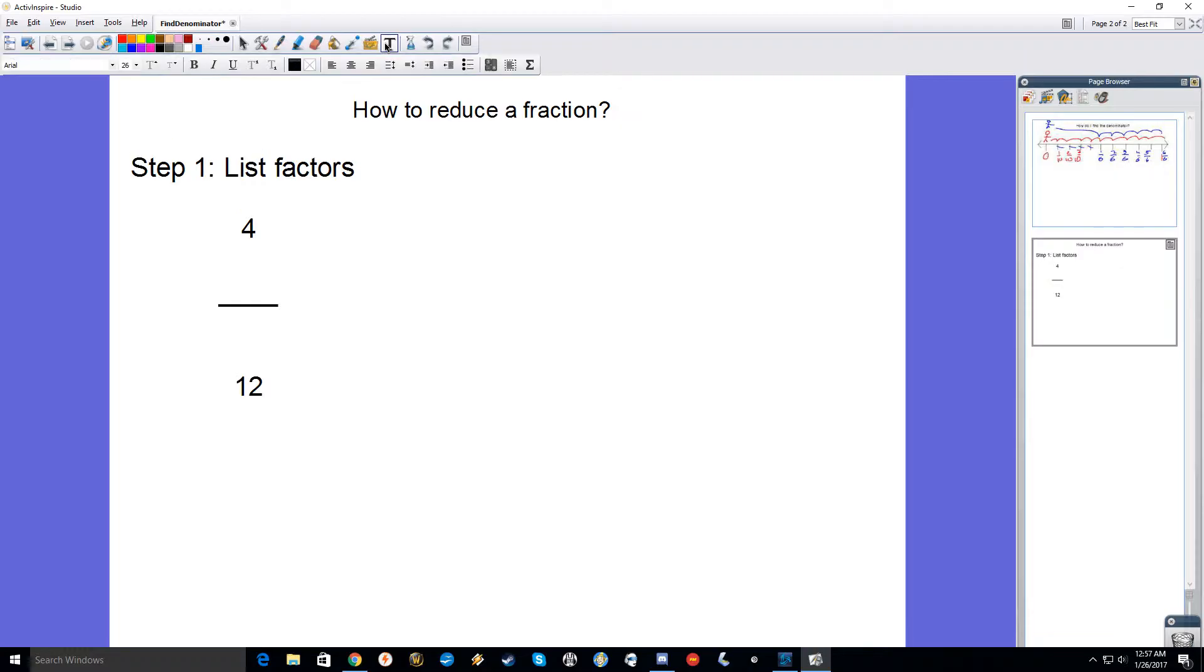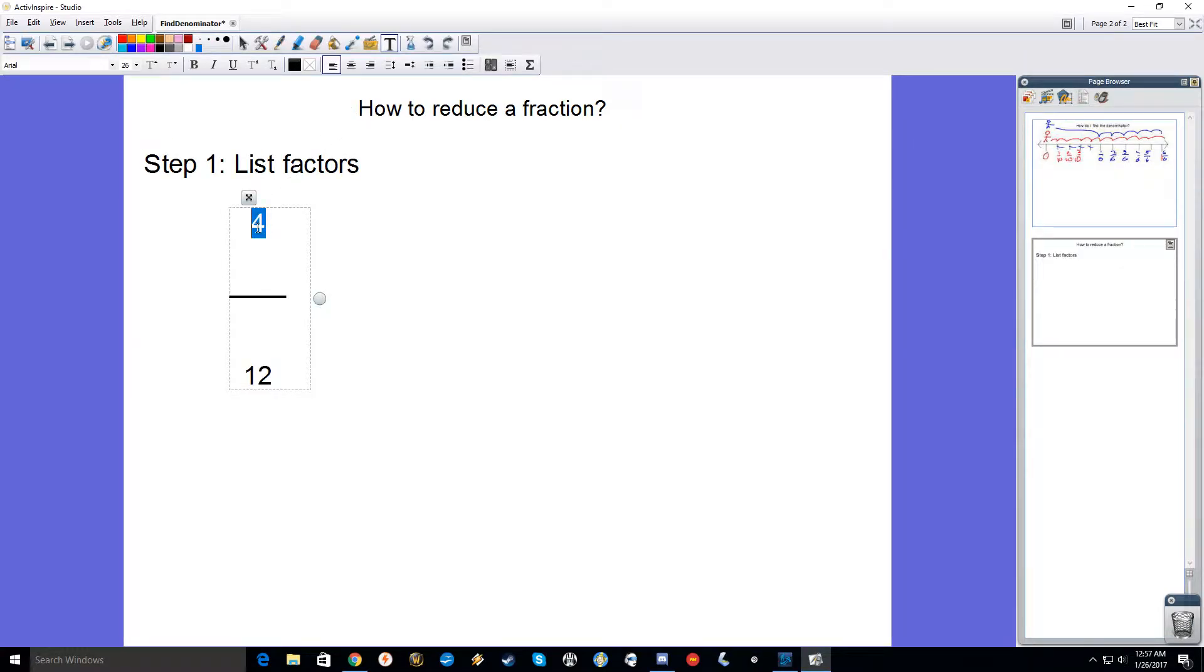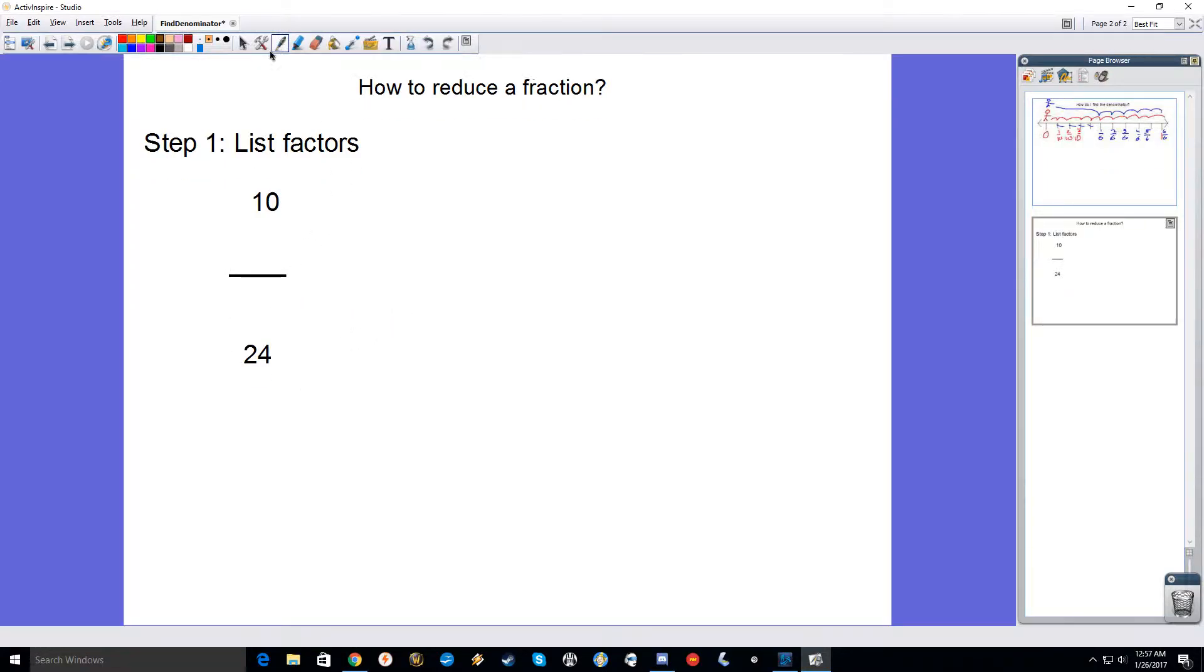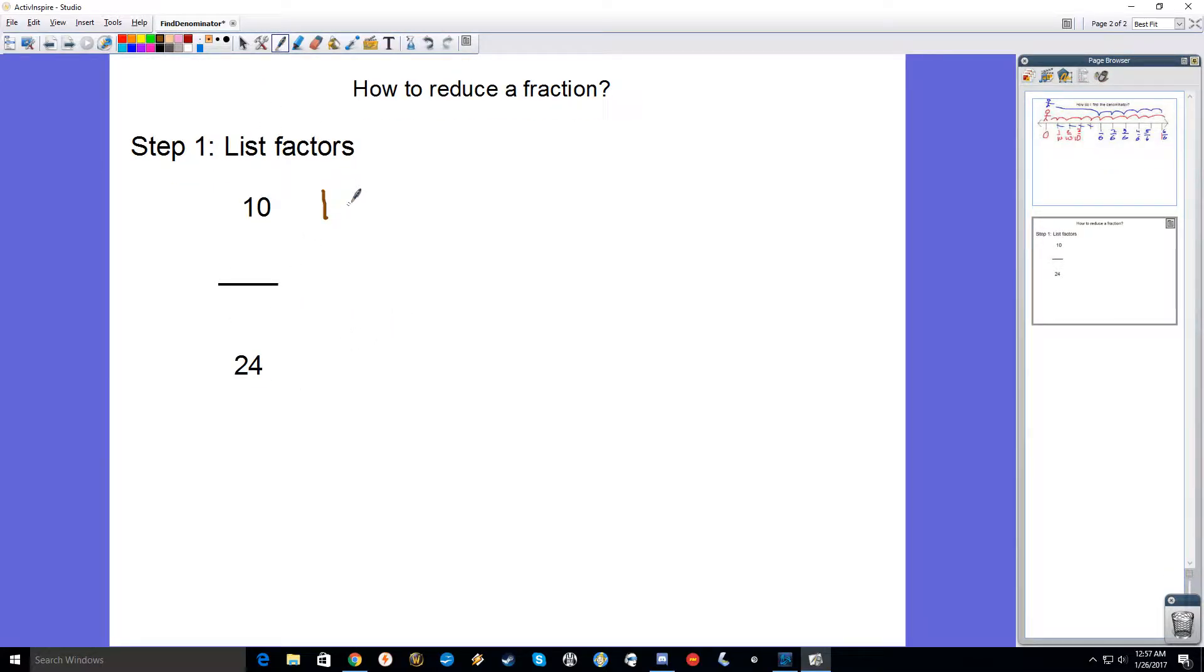So let's say I go with 10 24ths. So again, list the factors. 1, 2, 5, and 10.